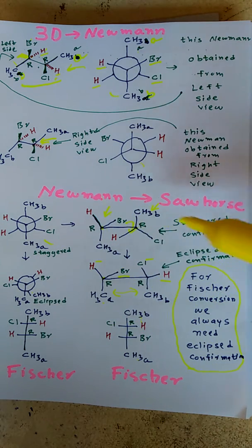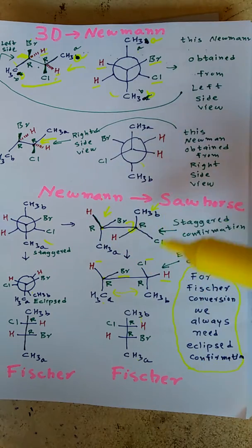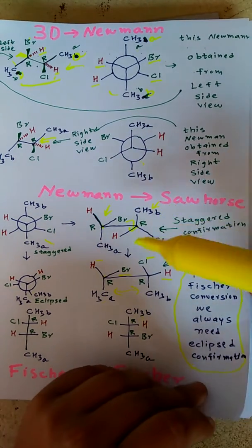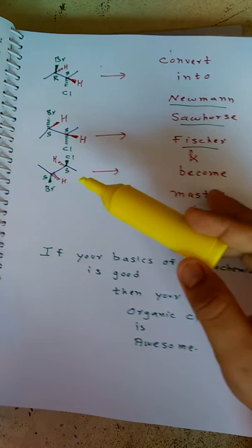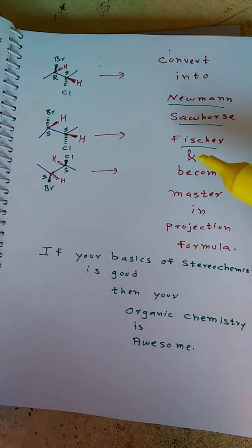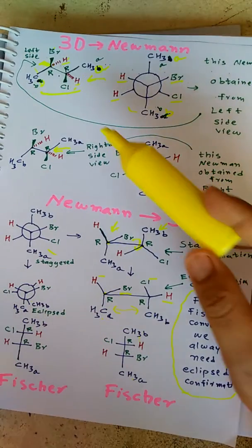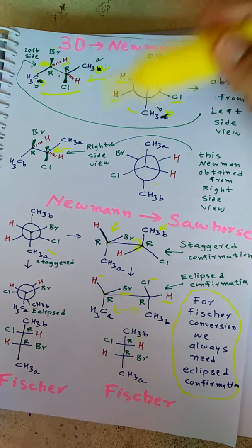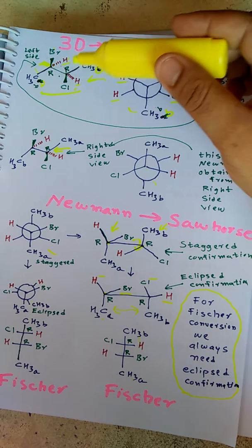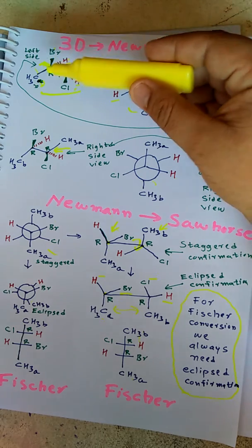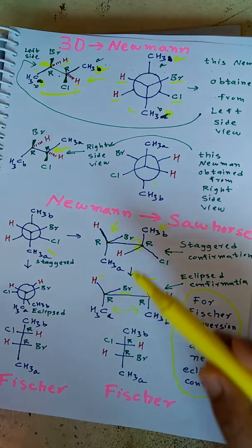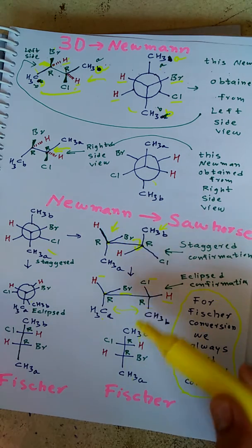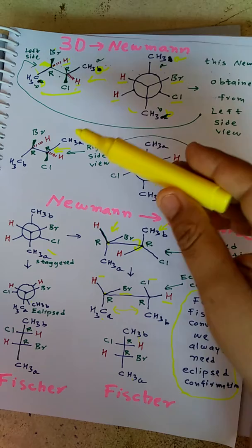Now every possible projection formula has been discussed. As an assignment, try to convert these three molecules into Newman, Sawhorse, and Fischer to become a master in projection formulas. One thing I forgot to tell — to confirm that you have done it right, determine the configuration R and R. Check: R and R, R and R, R and R everywhere — that means you have done it properly.